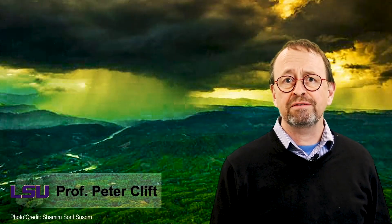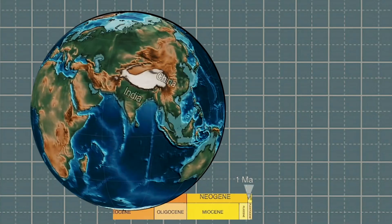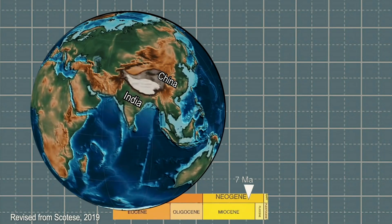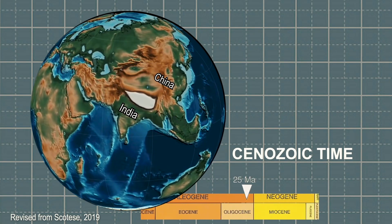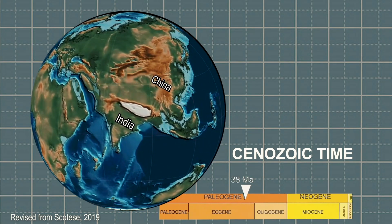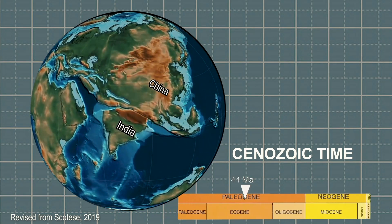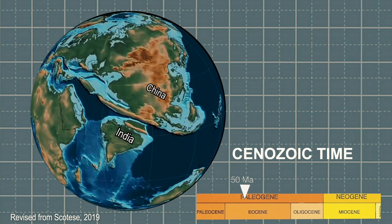Hi, I'm Peter Clift, Professor of Geosciences at Louisiana State University. Much of my research is concerned with young sedimentary rocks and sediments in and around Asia. When I say young, I mean sediments that were deposited in Cenozoic time, which is the last 66 million years of Earth history.